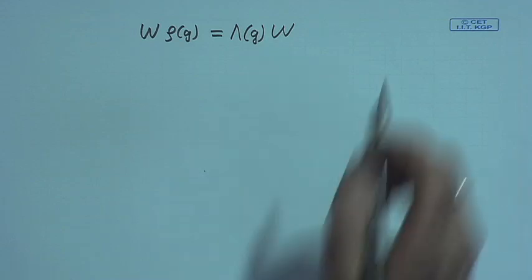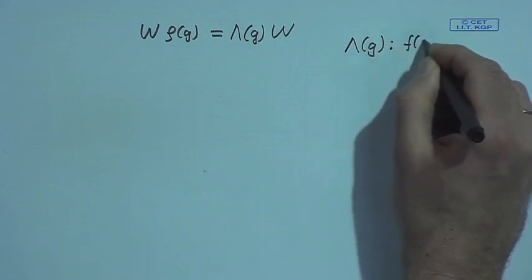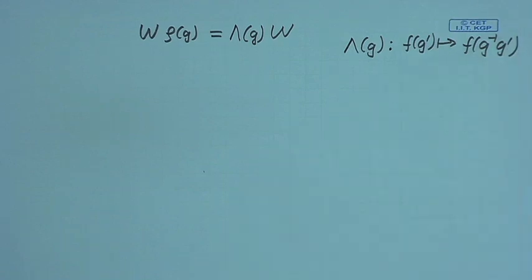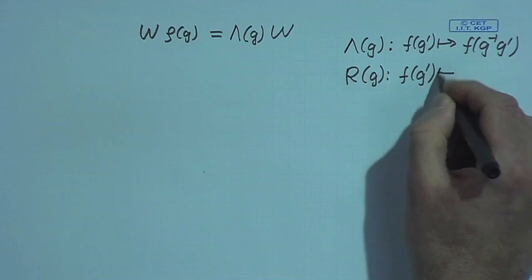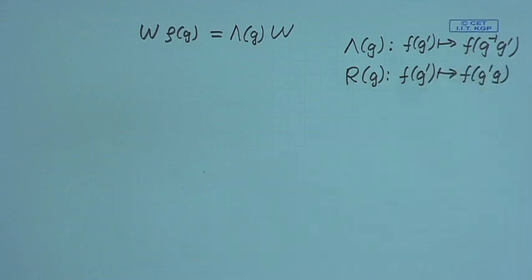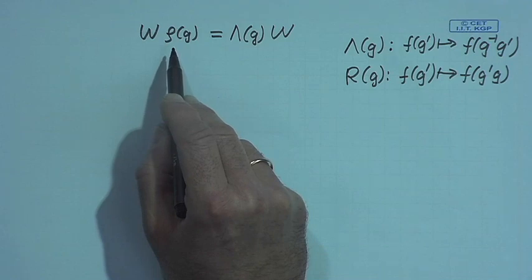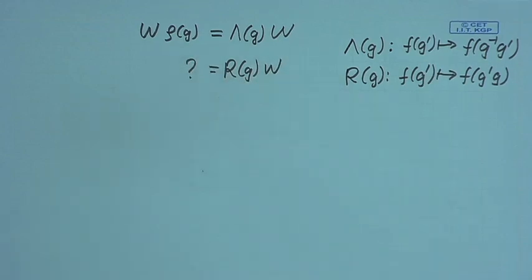Now, left shifts on functions on the group map function f to f(g^{-1} g'). Besides left shifts, on any group we also have right shifts. A right shift is a map which sends f(g) to f(g' g). If our group is non-commutative, multiplication from the left and from the right are in general different things, so they act differently.